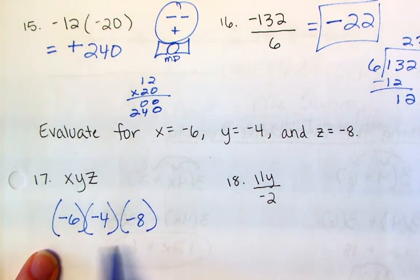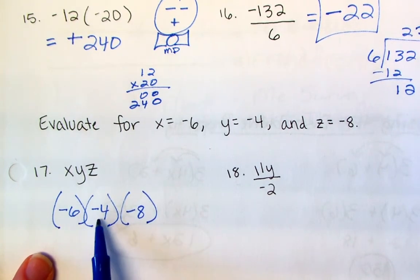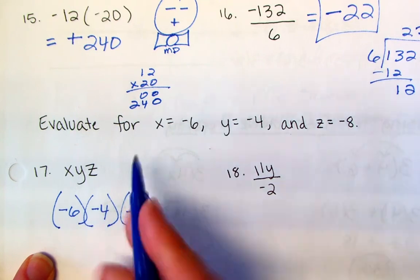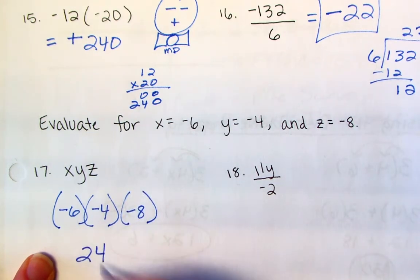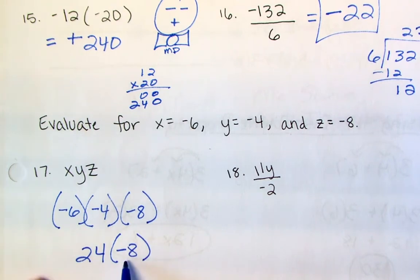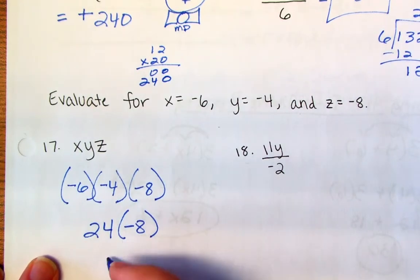So I'm going to go ahead and do these two at a time. So I have a negative and a negative, I know that's going to be a positive. 6 times 4 is 24. So it's a positive 24 times a negative 8. Now I have a positive times a negative. I know my answer is going to be negative.